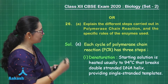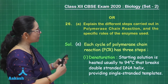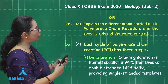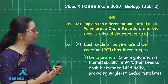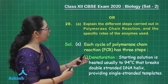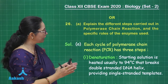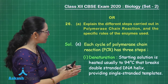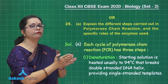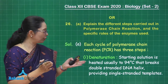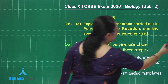The first step is denaturation, where the target DNA is heated up to 94 degrees Celsius. As a result, the hydrogen bonds are cleaved and the two strands separate out. That is the denaturation step.